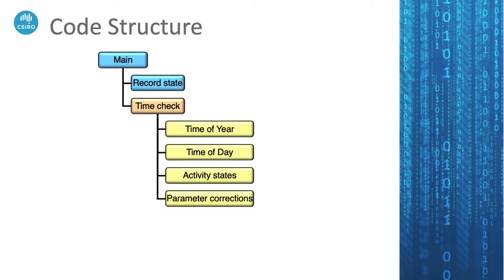The very next thing it does is check the time stamp inside the model — what time of year is it, what time of day is it — so that it can appropriately trigger the right species at the right time, or do calendar events such as recruitment or spawning at the right time. It also checks the activity state, so if you're an animal that's not active at night it changes state about what you can or can't do, and equally when you're in the daytime it enables a different set of states.